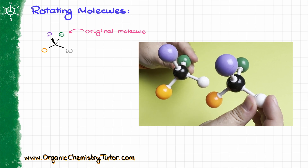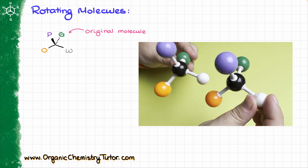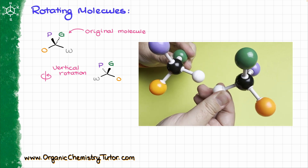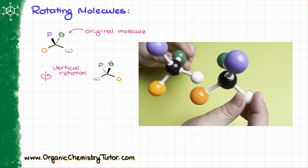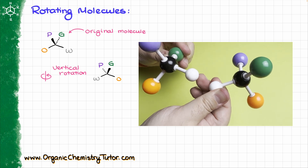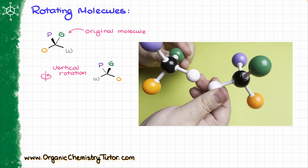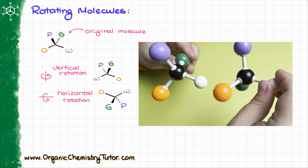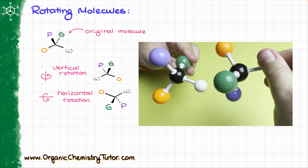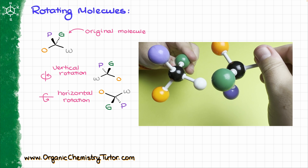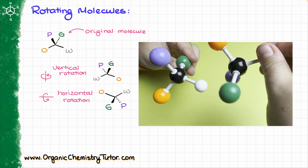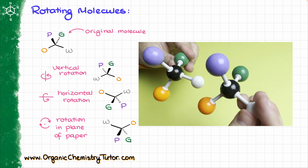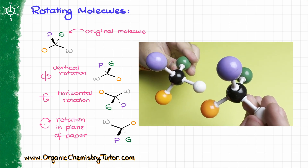When we rotate our molecule in space, it depends how we do the rotation. If I rotate my molecule along the vertical line, the purple one that was on the wedge will now be on the dash, and the green atom that was on the dash will now be on the wedge. Likewise, if I rotate along the horizontal plane, I'll see the same thing — purple goes to the dash and green goes to the wedge. However, if I rotate the molecule in the plane of paper, we will not see any changes to the dashes and wedges.